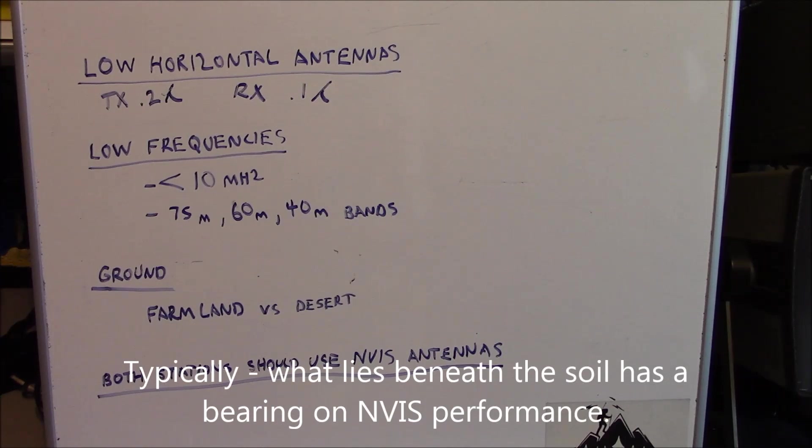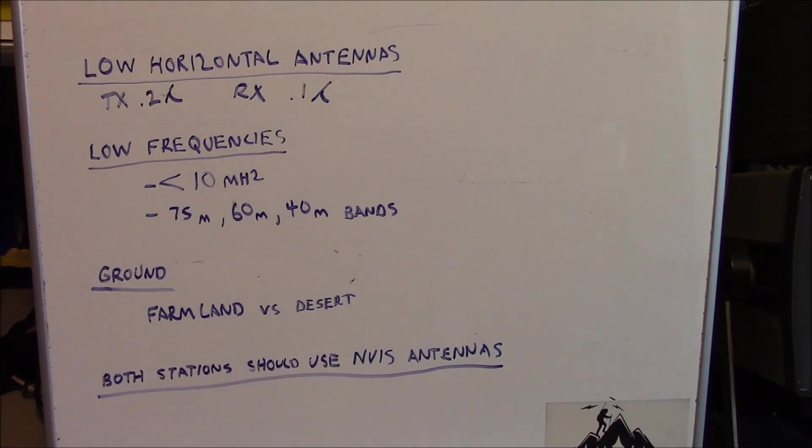The kind of ground that you're mounting your antenna over is also important. Farmland is better than desert, for example. Both stations should use NVIS antennas, meaning that anybody that's taking advantage of this propagation should utilize an NVIS antenna. If you have your antenna configured as an NVIS antenna and you're trying to contact another station in that sky wave skip zone, if they're utilizing a WIP antenna, your effectiveness of your talk path is going to be diminished.